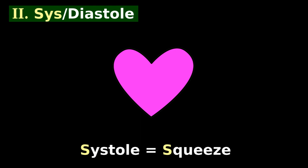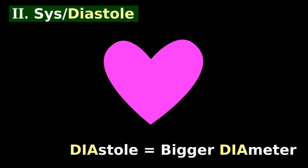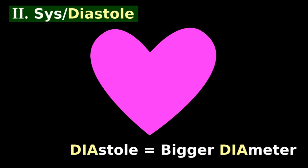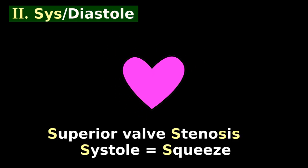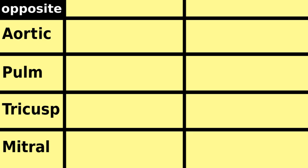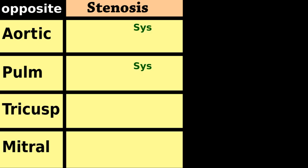Murmurs can occur during systole or diastole. Systole is when the heart squeezes hard. Diastole is when the heart has the biggest diameter. Superior valve stenosis is systolic. By opposites, if superior stenosis is systole, bottom valve stenosis is diastole.